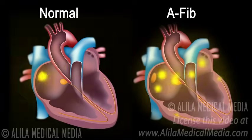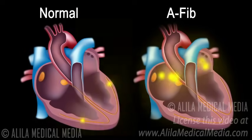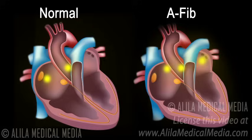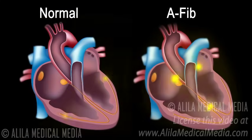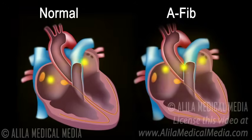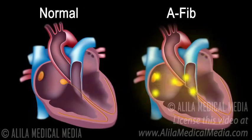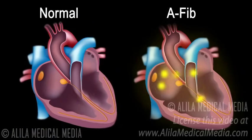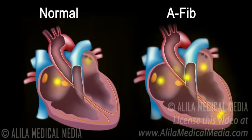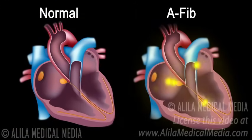In atrial fibrillation, electrical impulses are initiated randomly from many other sites called ectopic sites in and around the atria, commonly near the roots of the pulmonary veins. These unsynchronized, chaotic electrical signals cause the atria to quiver or fibrillate rather than contract.